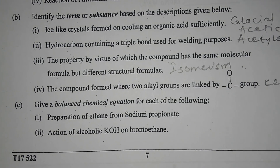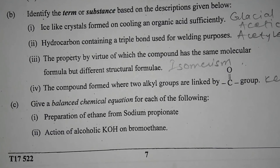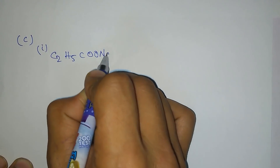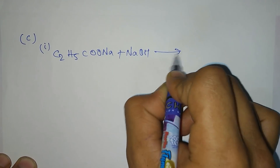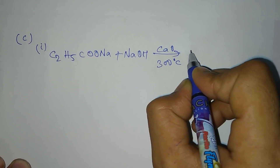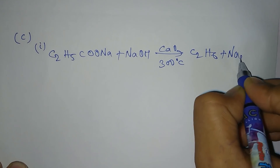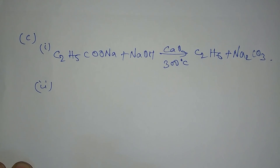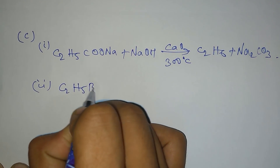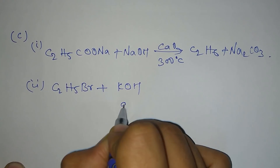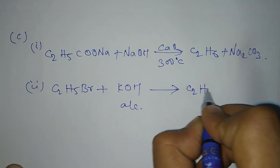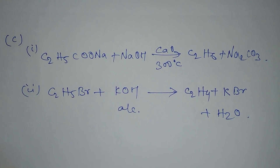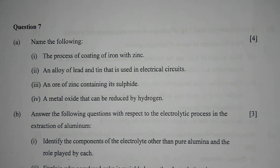Question 6c: give a balanced chemical equation for each of the following. Number 1 — preparation of ethane from sodium propionate: sodium propionate with NaOH in the presence of CaO at 300°C gives ethane and sodium carbonate. Number 2 — action of alcoholic KOH on bromoethane: bromoethane plus alcoholic KOH yields the double bond compound C2H4, KBr, and water.